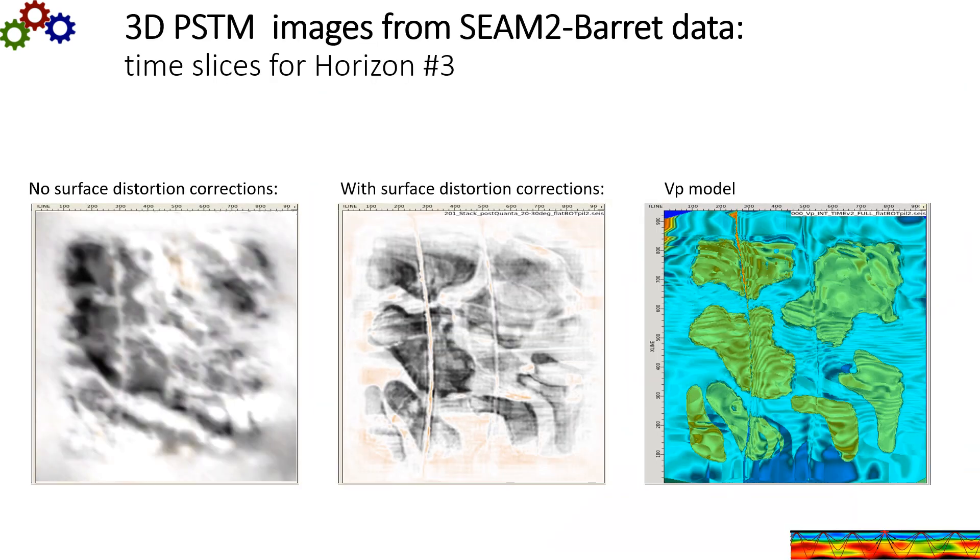Here's a demonstration of how the surface wavelet distortion harms imaging. And these are time slices from 3D PSTM for the SEAM2 Barrett data. Now a nice thing about using synthetic model is that we know the correct answer. And that's what you see over here on the right. And there are some geobodies embedded in the model at this horizon. Now on the left is the time slice with no surface distortion correction. Now it looks plausible. You might think these are geobodies, but it is clearly wrong. And there's an imprint of the surface geology on this result. If we correct for the surface distortion here in the middle, you can see we get a good accurate image. And these geobodies are now well resolved.